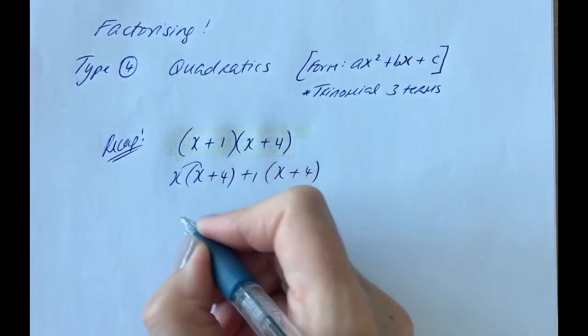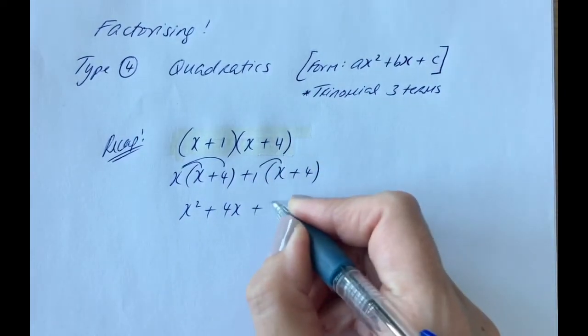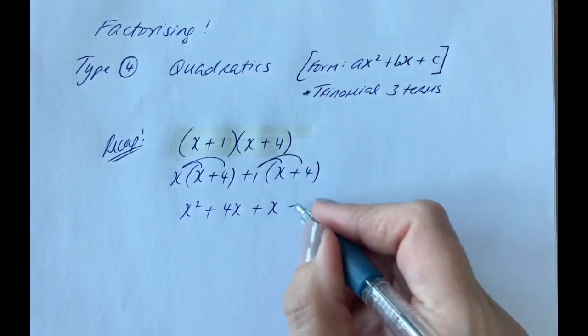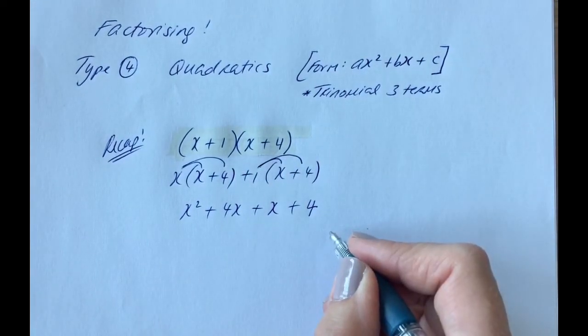And we'd get x by x is x squared, x by 4 is 4x, 1 by x is x, and 1 by 4 is 4.